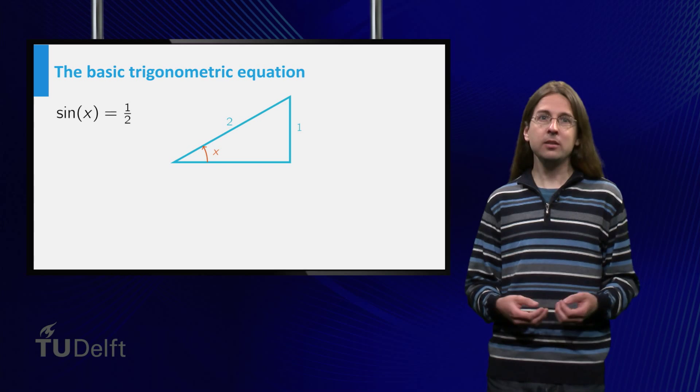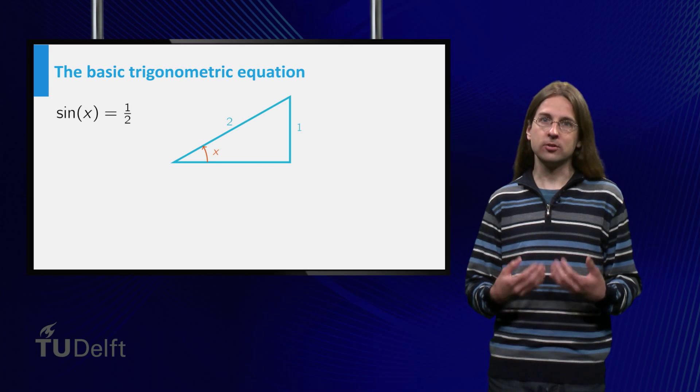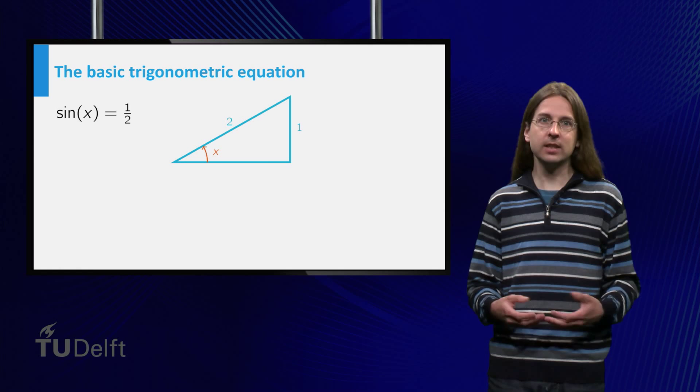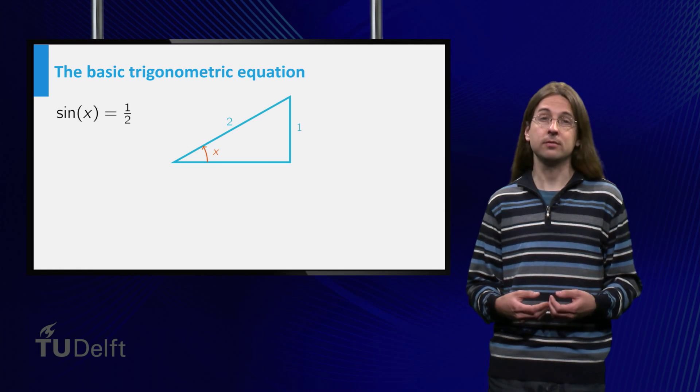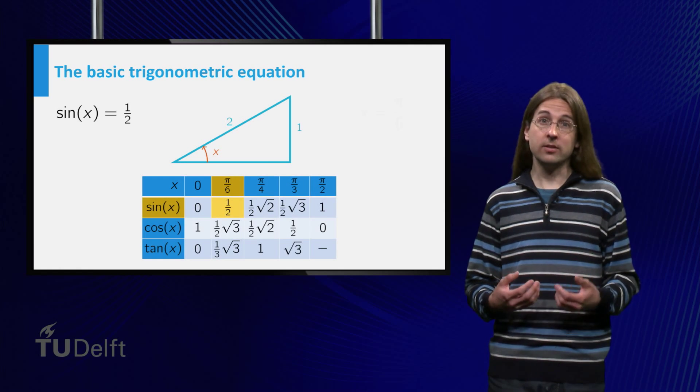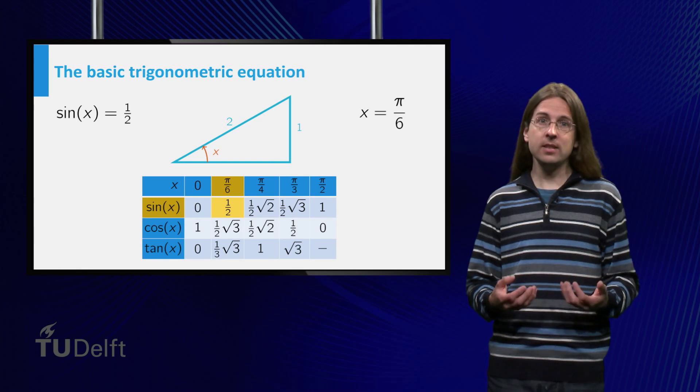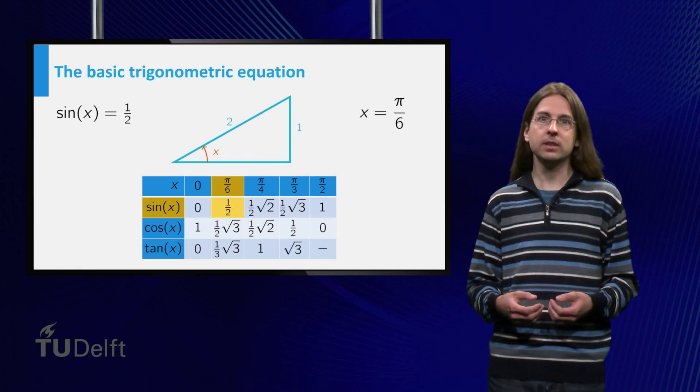Let us begin with the most basic kind of equation. Consider the angle x which satisfies sin(x) = 1/2. You can look in the table of the sine function and see that π/6, or 30 degrees, is a solution.